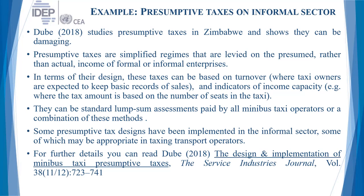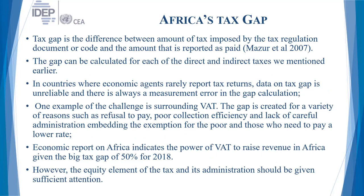You cannot assume all seats will be occupied at each and every single hour of the day. Therefore, there should be some reasonable assumption of potential income capacity and actual turnover that the taxi owners manage to achieve — but only if there are some records. Presumptive taxes can be standard lump sum assessments paid by all minibus operators, or a combination of methods. At the same time, they should also be provided services. I always want to emphasize the two-sided nature of tax payment and receipt of services by taxpayers.